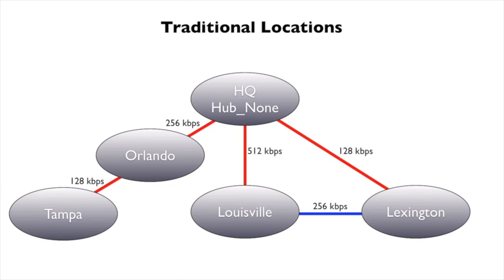That one connection went right back to HQ. For example, if we had a call going on between Louisville and Lexington, there's a 256k link between those two sites, but locations would not know about that link. It only knew about the links going directly between HQ — our hub none location — and the other sites. So this 256k link was totally ignored, and there wasn't a great way to specify an accurate bandwidth amount. Also, take a look at Tampa — Tampa goes through Orlando to get back to the HQ site, but HQ is assuming Tampa is just another spoke.